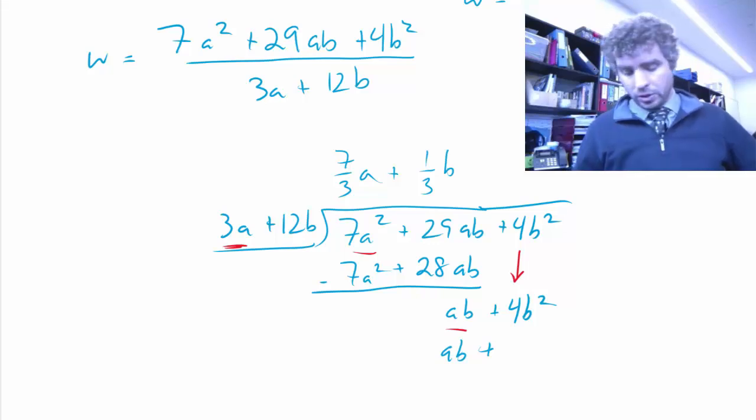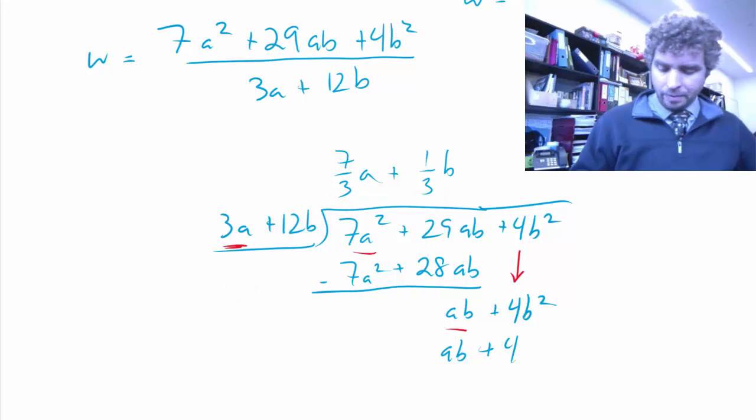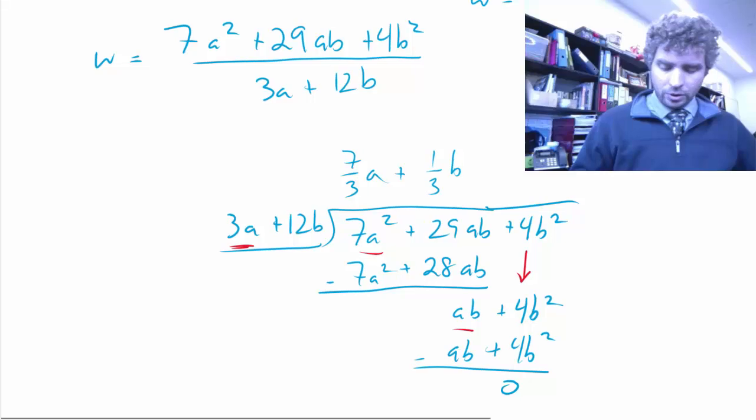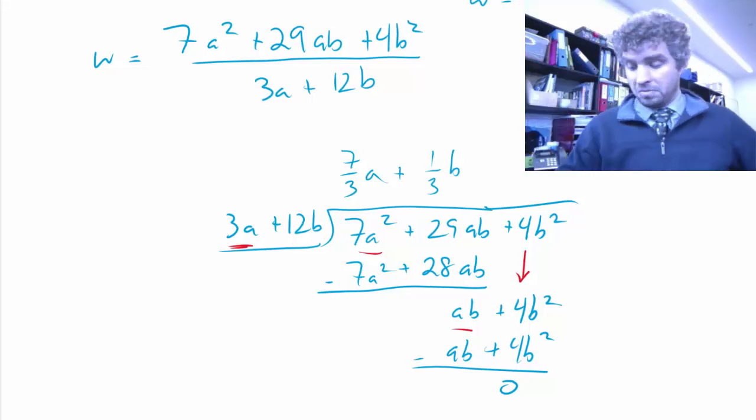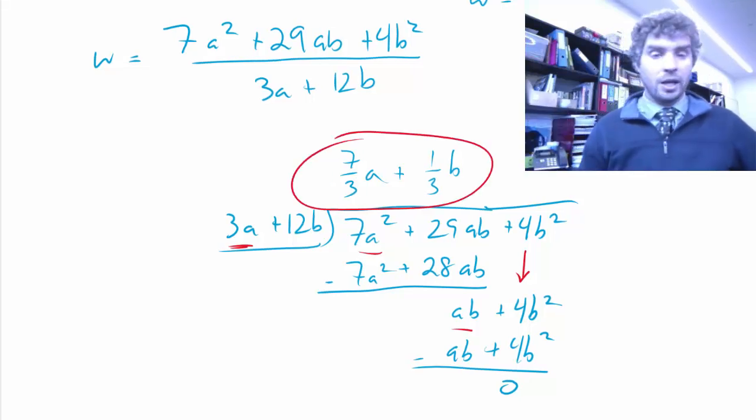And then 1 third b times 12b, 12 divided by 3 is 4, so 4, and then b times b is b squared, and lo and behold, those are the same. So, there is no remainder, which means that we are done. This is the answer.